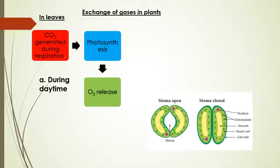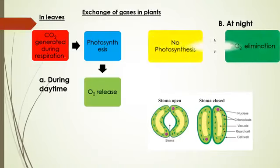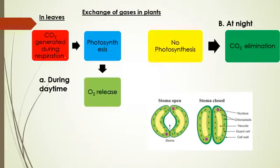During the night, there is no photosynthesis because there is no sunlight. So carbon dioxide produced during respiration is eliminated and not consumed by the plant. This is why our elders say don't sleep under a tree at night — there is an excess of carbon dioxide just under the tree.